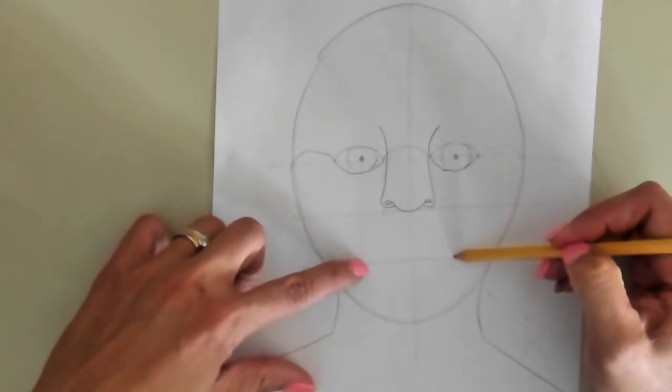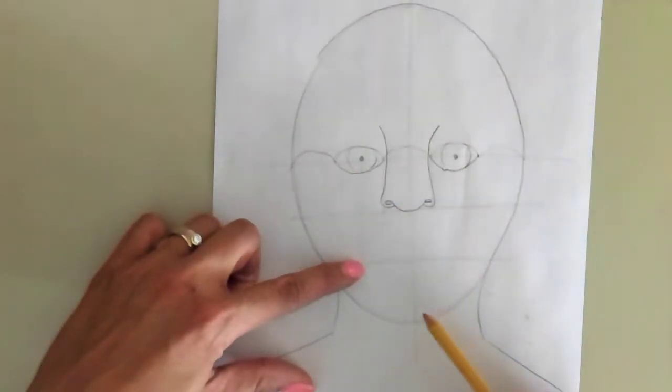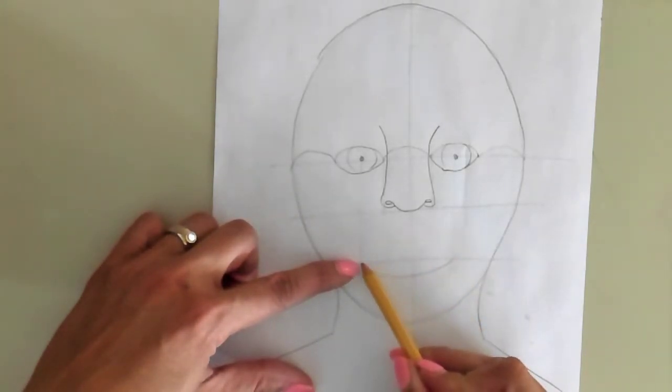Now like I said, your eyes are going to be guidelines for how big your mouth is. So your mouth, if you start out with a football shape, you want to split it into two lips.